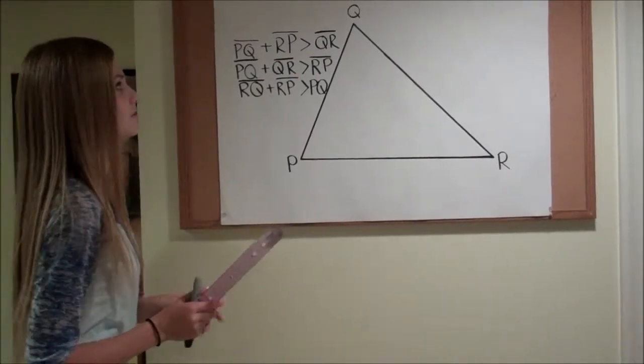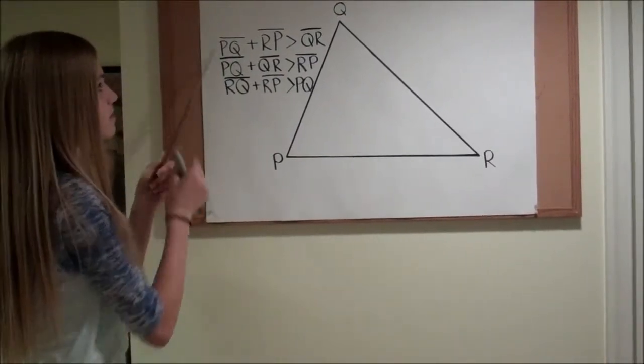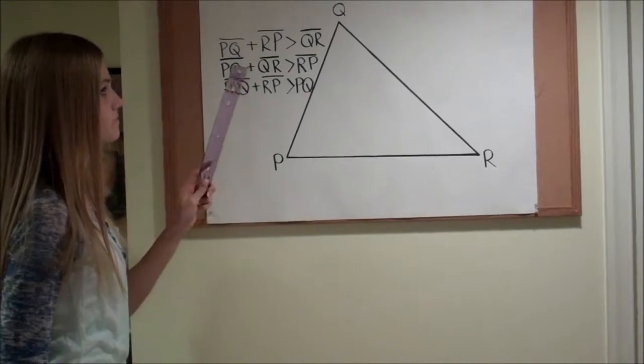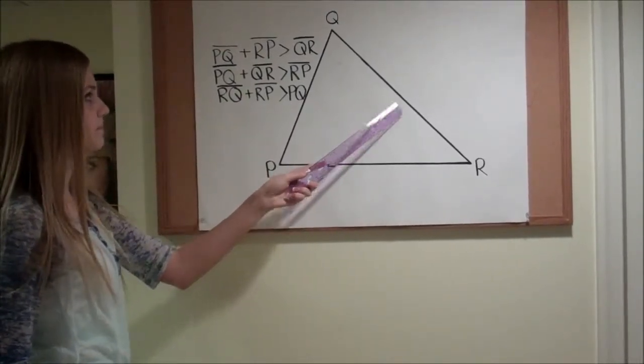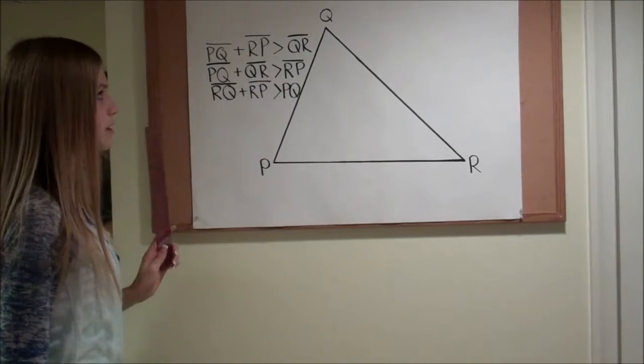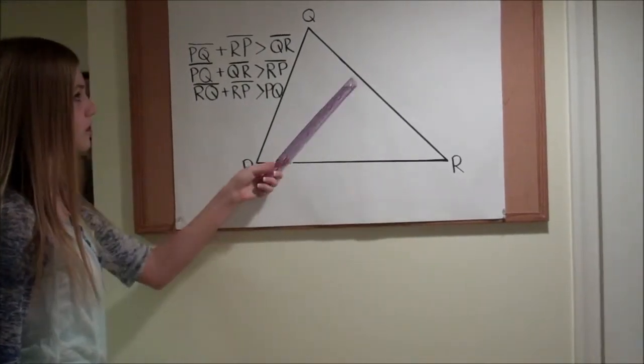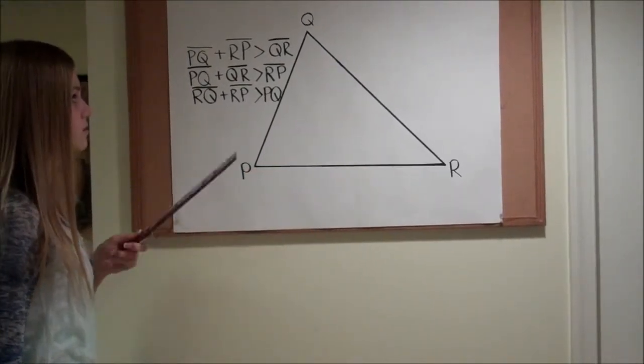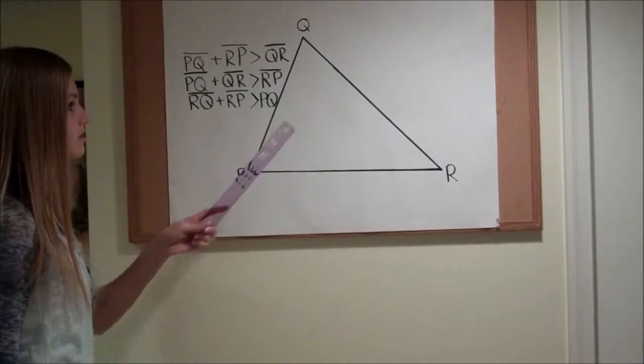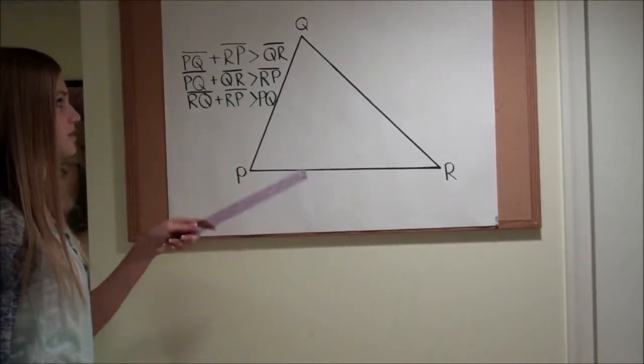In this triangle, line segments PQ and RP are greater than QR. PQ and QR are greater than RP. And QR and RP are greater than PQ.